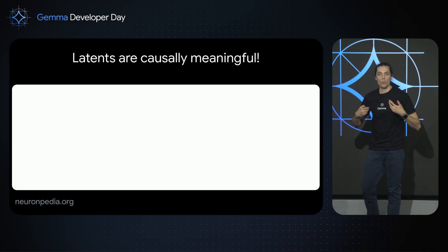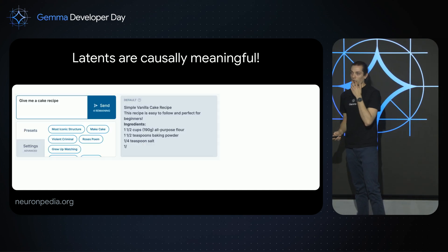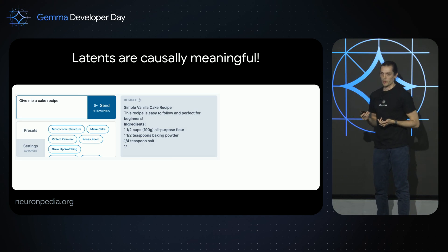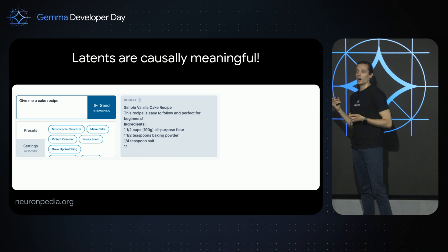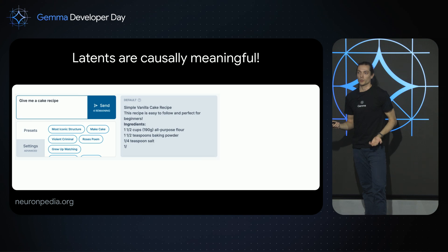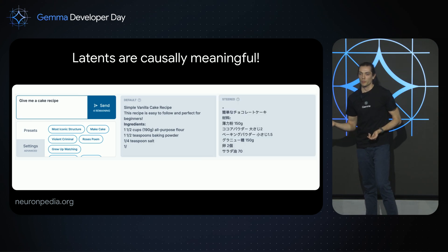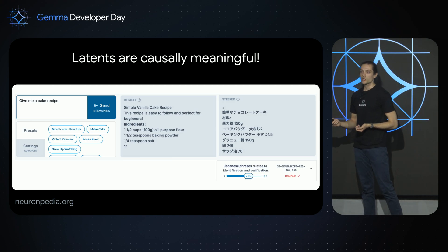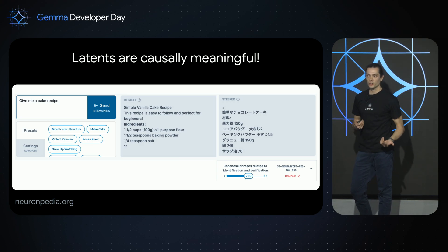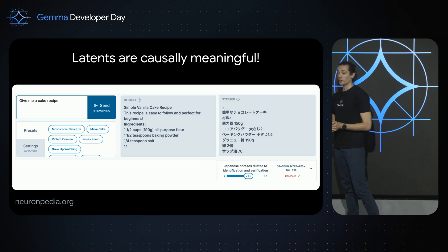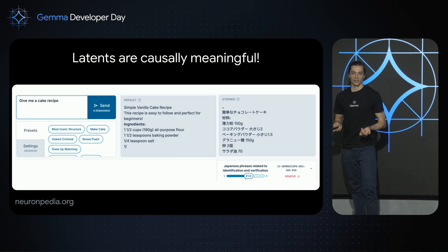But what if we make a feature more active than it would normally be? This is a screenshot from the Neuronpedia website, which we are collaborating with to host an interactive GemmaScope demo. I asked the model to give me a cake recipe and got an English response — so far so good. However, using GemmaScope, I can get a cake recipe in Japanese. What I did was select a feature that fired on Japanese text and made that feature much more strongly active, resulting in the model answering in Japanese to my English query without any fine-tuning of the weights or system prompting.